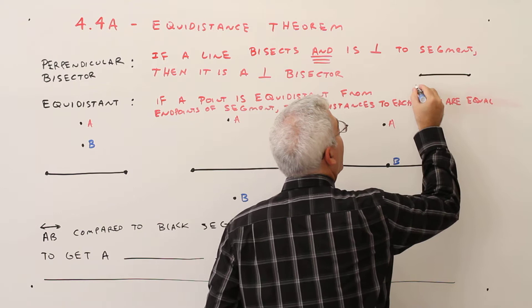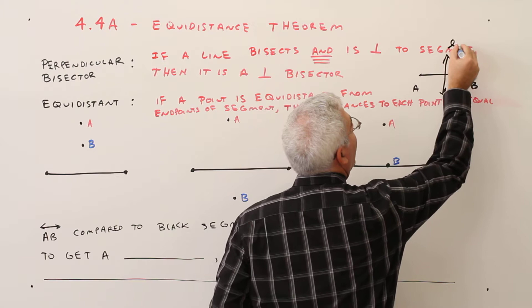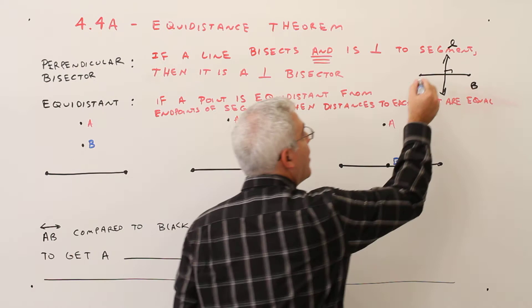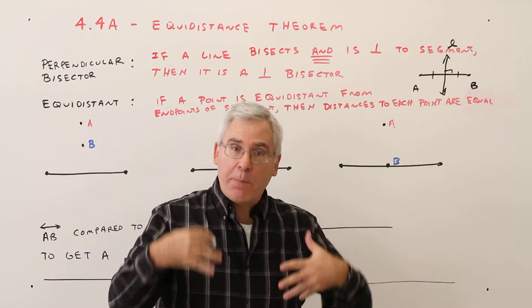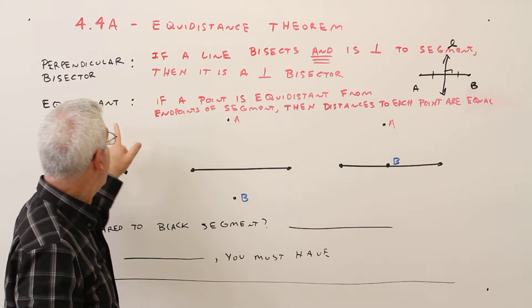Here's an example. We'll call that segment AB, and we'll have a line here — we'll call that line L. If line L is perpendicular to AB, and line L bisects AB, then line L is called the perpendicular bisector of segment AB.